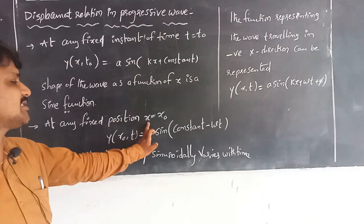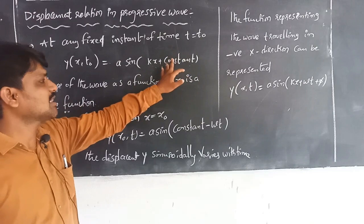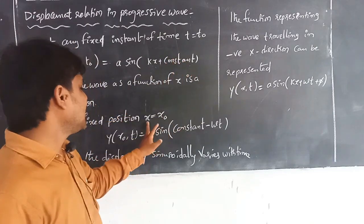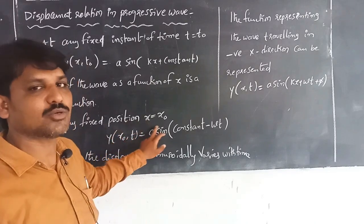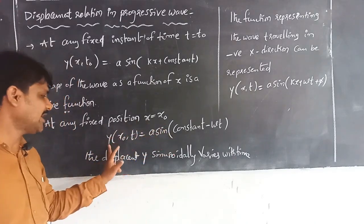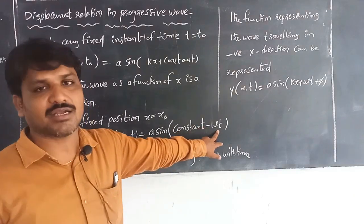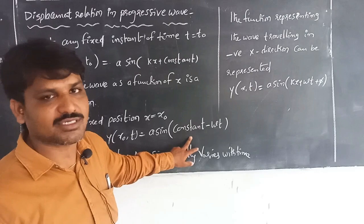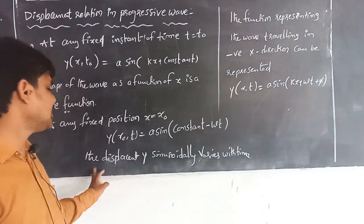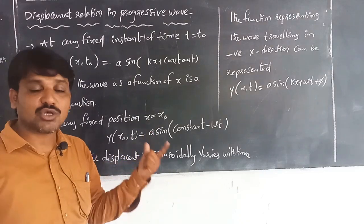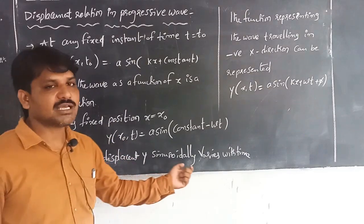At any fixed position x = x₀, the displacement relation becomes y(x₀, t) = A sin(constant − ωt). The position remains constant, while the angular frequency and time vary. Therefore, the displacement y varies sinusoidally with time t.